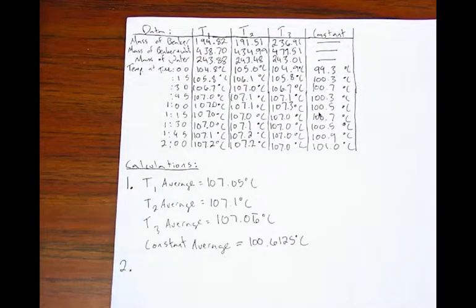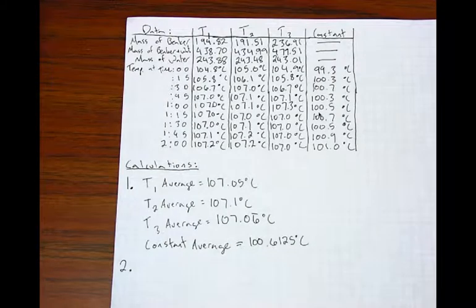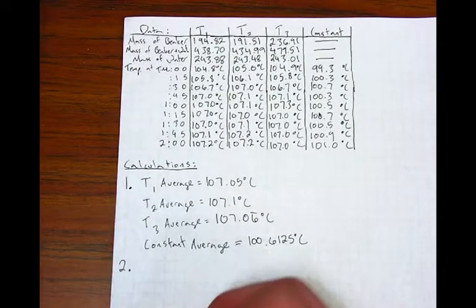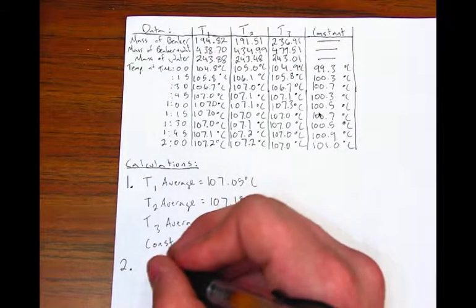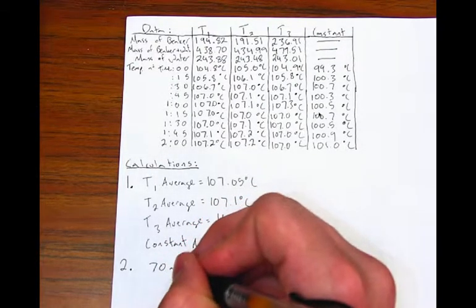The next step is that for each of the trials, you must calculate the molality of sodium chloride in moles of sodium chloride per kg of water. Record these calculations in your data analysis section as well.